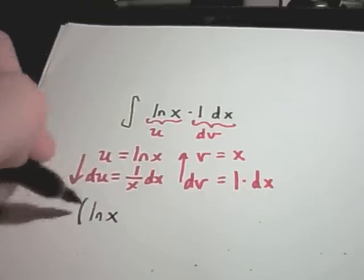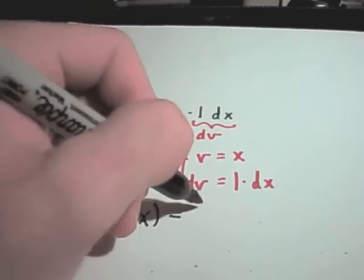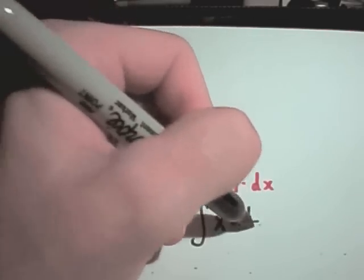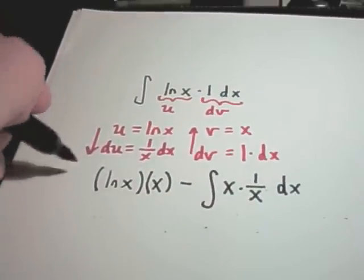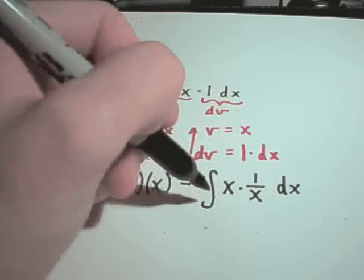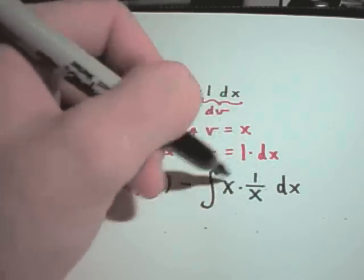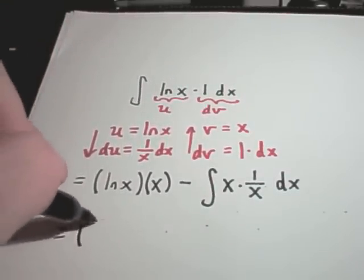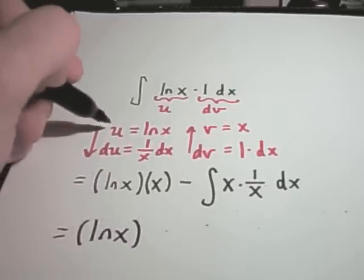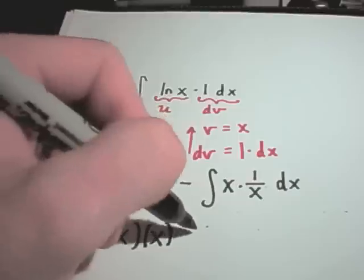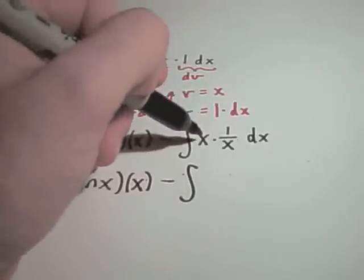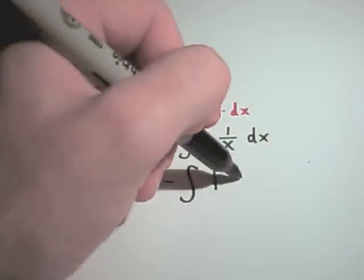It says you'll get u times v. So, ln of x times x minus the integral of v, which is x, times du, which is 1 over x dx. When you're doing integration by parts, hopefully the new integral you have should be easier to evaluate or somehow at least more simplified than what you started with. If not, it either means you picked the wrong u and the wrong dv, maybe you should switch those, or it just means you shouldn't be doing integration by parts on this problem at all in the first place. x times 1 over x is just 1 dx.